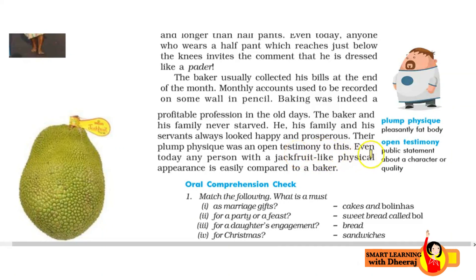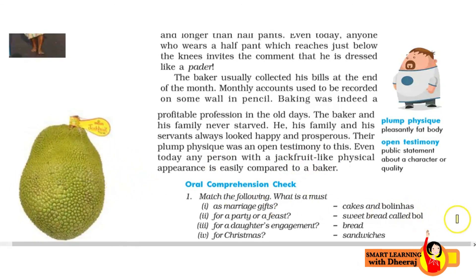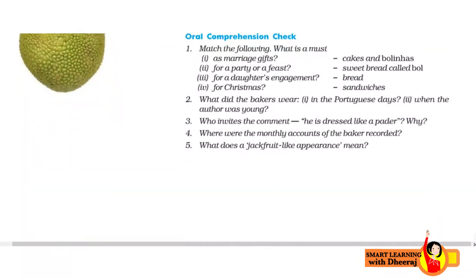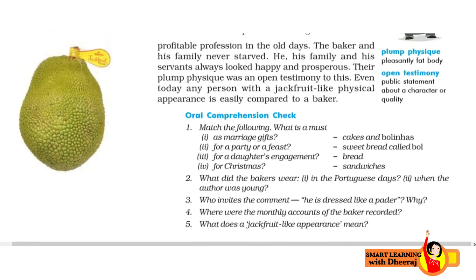Even today, any person with a jackfruit-like physical appearance is easily compared to a baker. Jackfruit — ek fruit hota hai, ise Hindi mein kathal bolte hain — is tariqi ki physique wala jo aadmi hota hai, usse easily hum log kisi bhi baker se compare kar dete hain. So yahan pe jo hai, woh Goa ke bakers ki ek jhalak humein mili hai, jo hamare author ne bahut hi achche tariqi se describe ki hai — the importance of the bakers in traditional times.